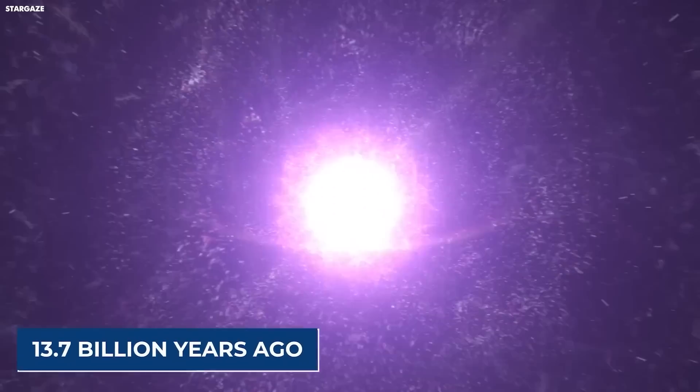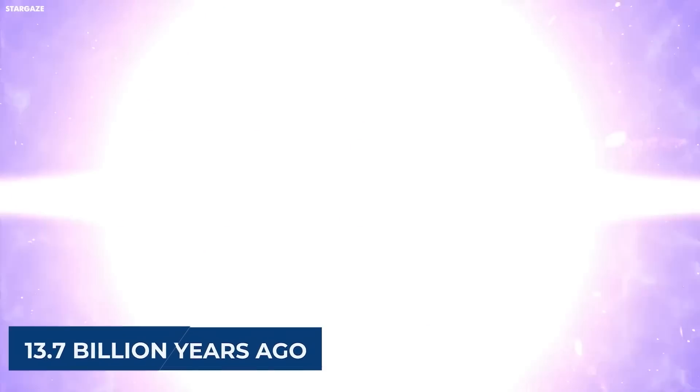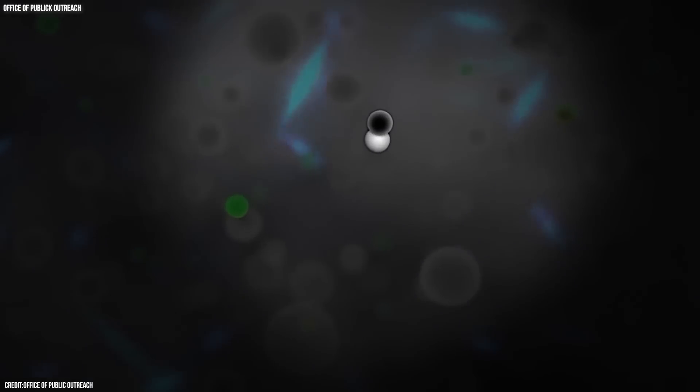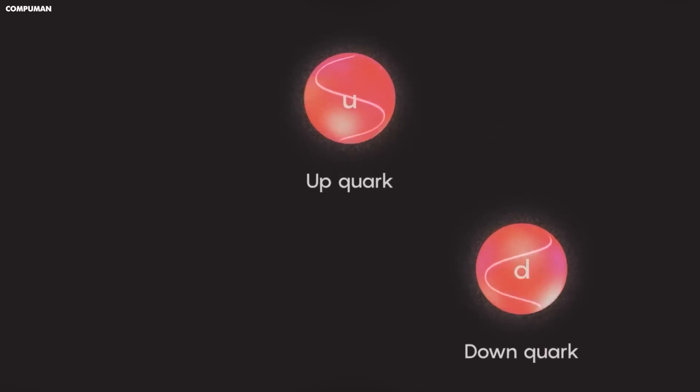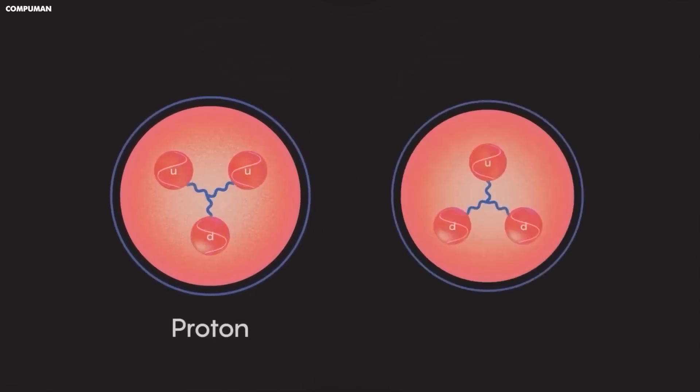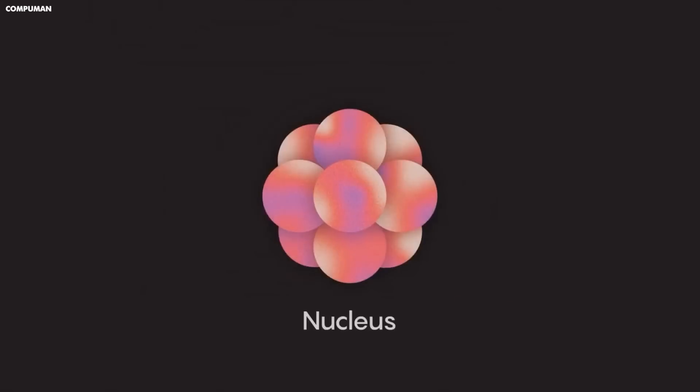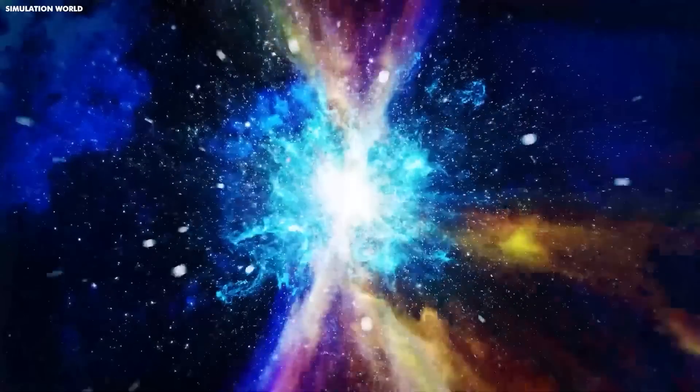So where did atoms come from? Atoms were created 13.7 billion years ago following the Big Bang. As the hot, dense new universe cooled, conditions became favorable for the formation of quarks and electrons. Quarks combined to form protons and neutrons, which then combine to form nuclei. According to CERN, this all happened within the first few minutes of the universe's existence.